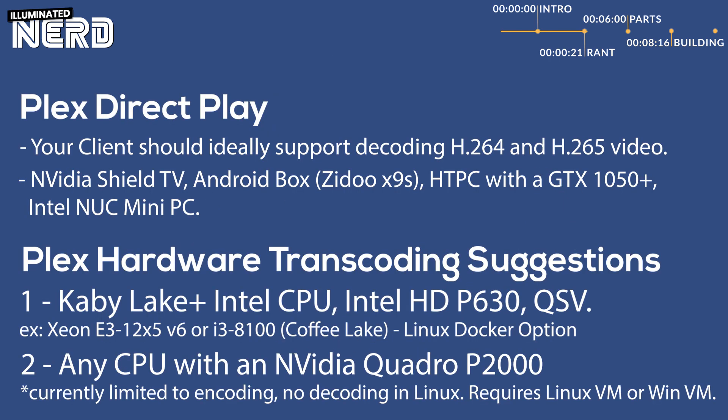Before I show you all of the hardware that I ended up getting, I thought I'd explain a couple of the requirements with Plex as far as hardware transcoding and why I ended up going the direction that I went with my Xeon processor. When it comes to using Plex Media Server, you should always be aiming to direct play content. What that means is that if the codec — the video and audio codec that your media file is encoded in — is supported by the client you're using to play that media file, then you don't need to transcode that file at the server level. It will just download the media file and direct play it on your client.